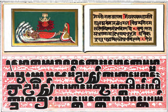Pali nouns inflect for three grammatical genders and two numbers. The nouns also, in principle, display eight cases: nominative, vocative, accusative, instrumental, dative, ablative, genitive, and locative. However, in many instances, two or more of these cases are identical in form; this is especially true of the genitive and dative cases. A-stems, whose uninflected stem ends in short a, are either masculine or neuter. The masculine and neuter forms differ only in the nominative, vocative, and accusative cases.